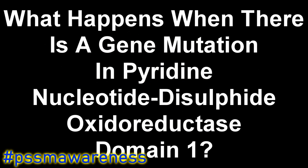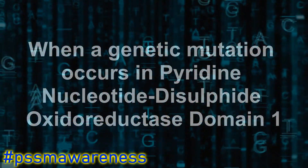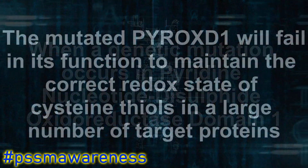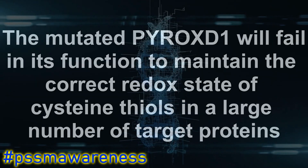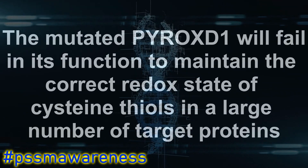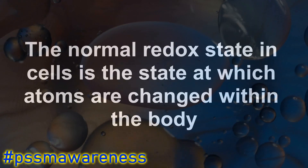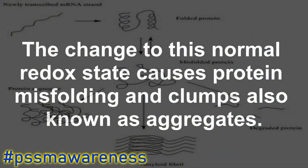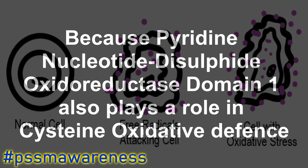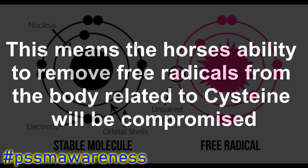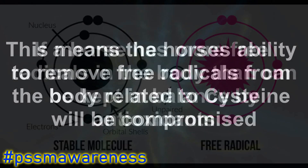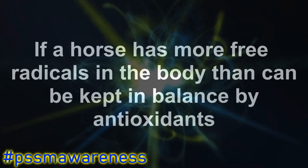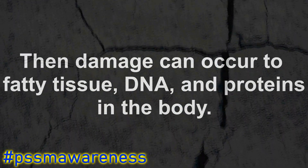What happens when there is a gene mutation in pyridine nucleotide disulfide oxidoreductase domain 1? When a genetic mutation occurs, the mutated PYROXD1 will fail to maintain the correct redox state of cysteine residues in a large number of target proteins. The normal redox state is the state at which atoms are exchanged within the body. Disruption to this causes protein misfolding and clumps, also known as aggregates. Because PYROXD1 also plays a role in cysteine oxidative defense, a horse's ability to remove free radicals related to cysteine will be compromised, potentially causing damage to fatty tissue, DNA, and proteins.